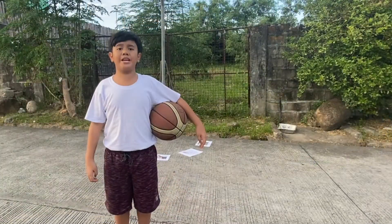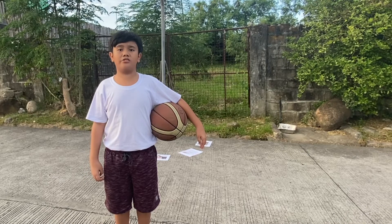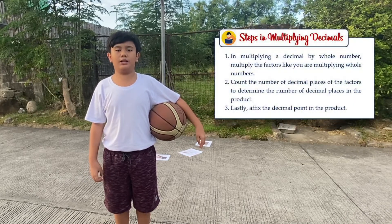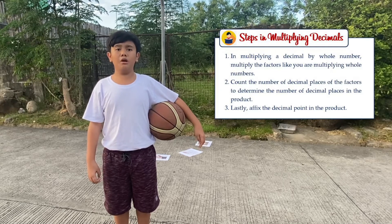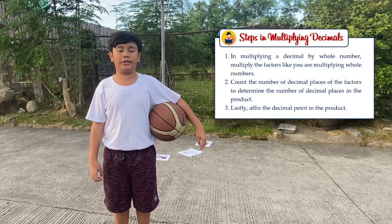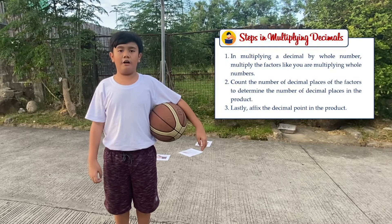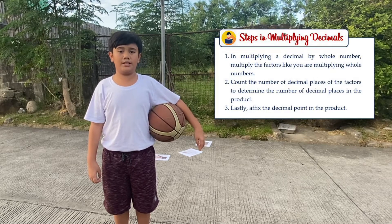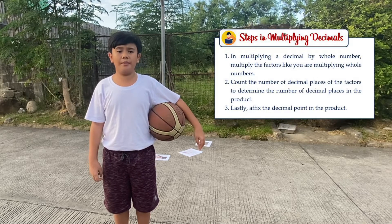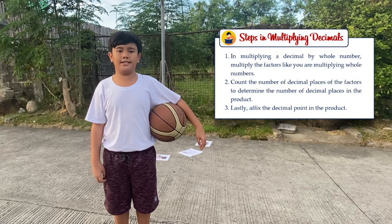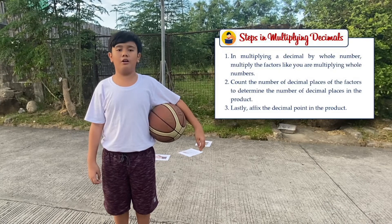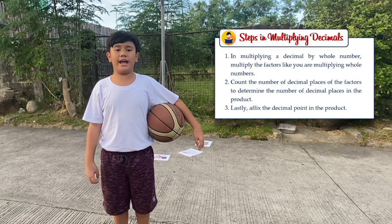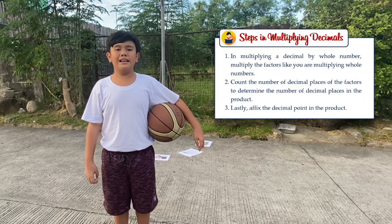Before we begin the game, let us first review the steps in multiplying decimals. In multiplying a decimal by a whole number, multiply the factors like you are multiplying whole numbers. Count the number of decimal places of the factors to determine the number of decimal places in the product. Lastly, affix the decimal point in the product. Okay, we're all set! Are you ready now to shoot the ball and learn? Let's start!